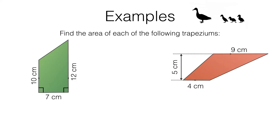Here are two more examples. Pause the video and have a go at these for yourself. Here's what you should have found. We can do this either by using the formula or by splitting it up into triangles. I'm going to use the formula for this one. So we know that area = ½h(a + b).